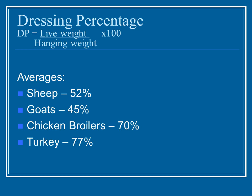Averages: sheep 52%, goats 45%, chicken broilers — as opposed to stewing hens — you want 70%, and in turkeys you really want to get 77% dressed out for your usable meat. For a simple example, a 100-pound sheep ends up having a hanging weight of 50 pounds. You multiply that by 100 and get 50% dressing percentage, which is actually below the average — you'd really want that animal to be at least 52 pounds hanging weight.